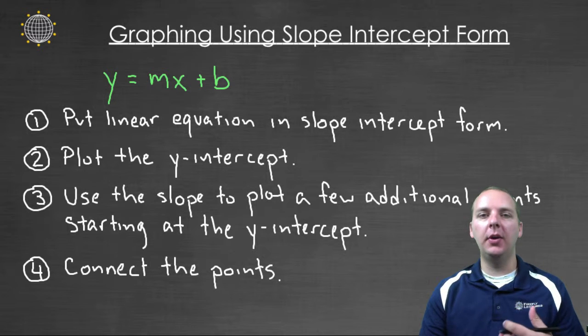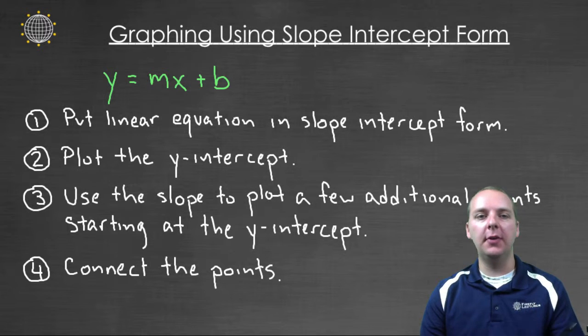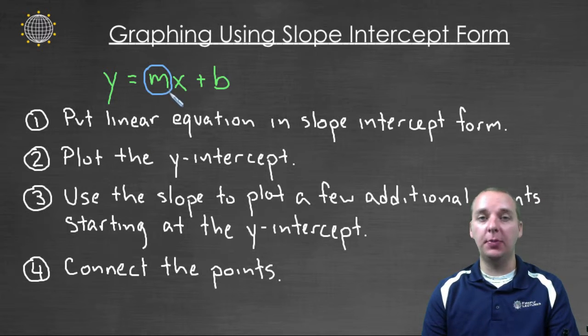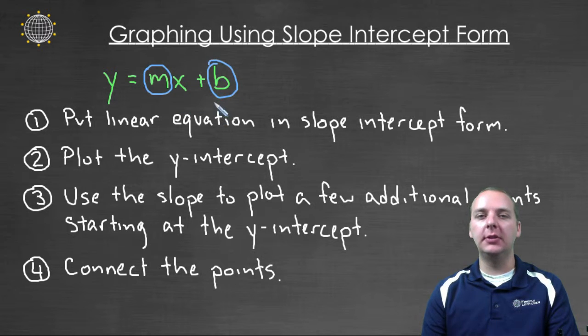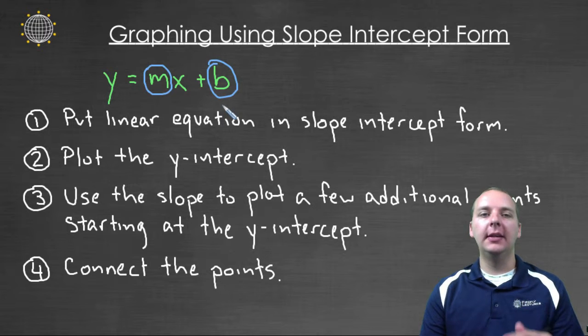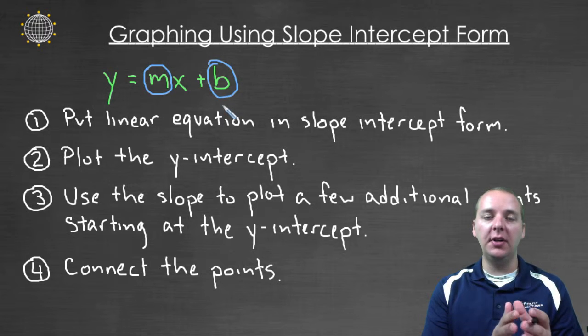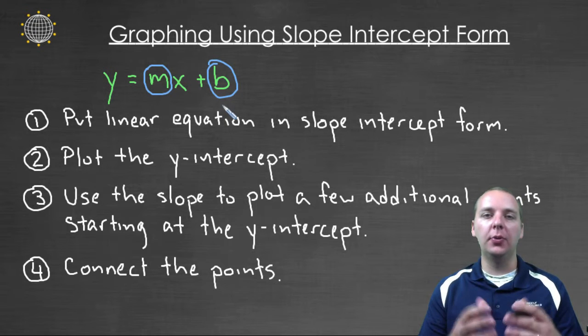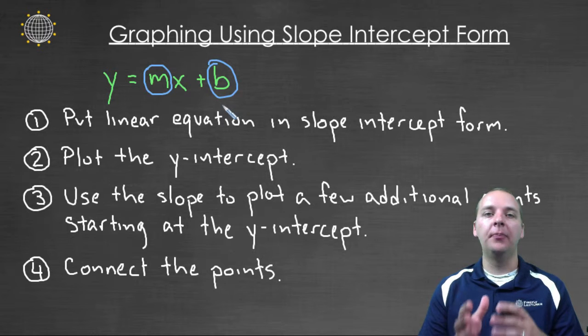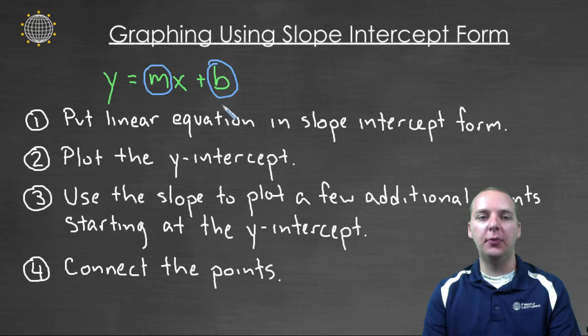In this video I'm going to assume that we already are familiar with slope intercept form. I'm going to assume that we already know that the m, the coefficient of the x, represents the slope of the line, and that the b represents the y intercept of the line. In this video what we're going to talk about is how we take that equation that's written in slope intercept form and get a graph from it.